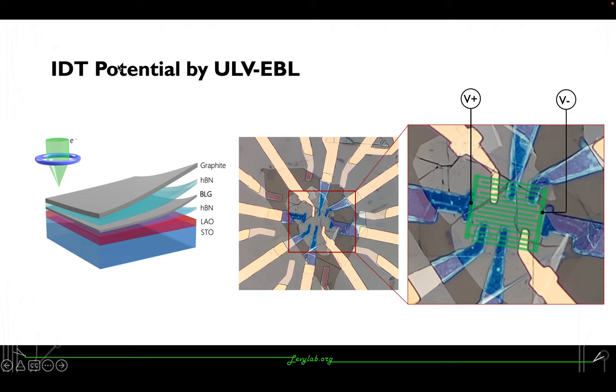Another set of experiments we're doing right now is putting interdigital transducers at the potential underneath the device. The stack here is bilayer graphene encapsulated by boron nitride with graphite top gate on LAO/STO. The ideal case is with different potentials, differential potentials, to different sides of the IDT.